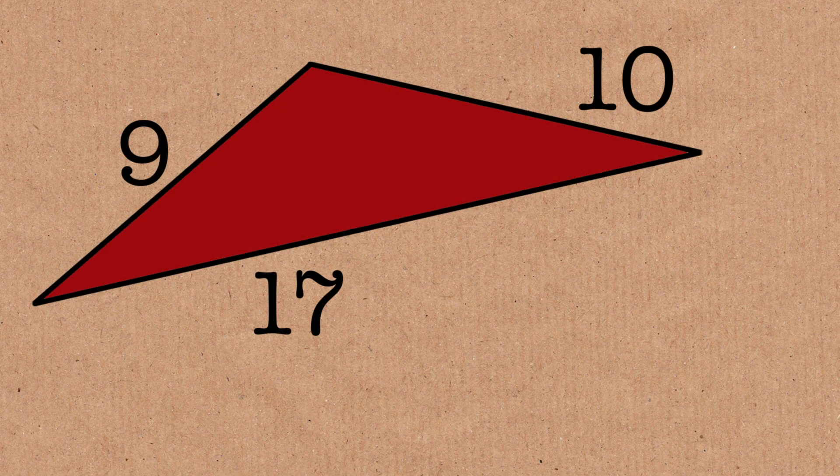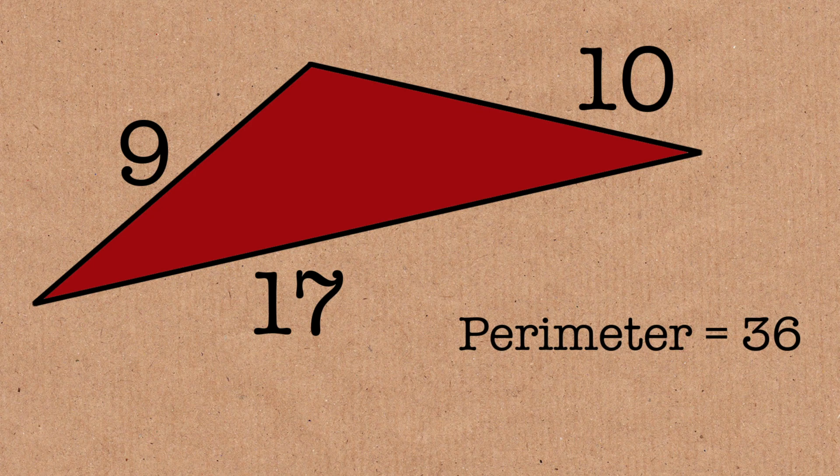This one, perimeter, what is the perimeter? 36. And you won't be surprised, area is 36 as well.